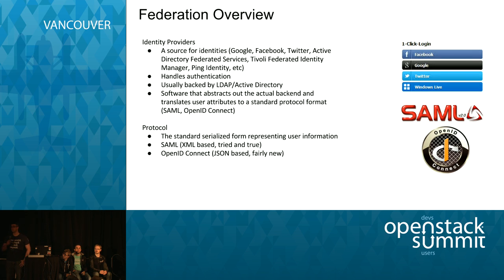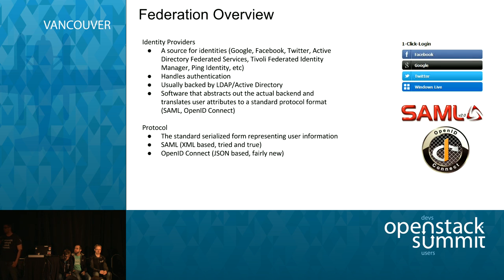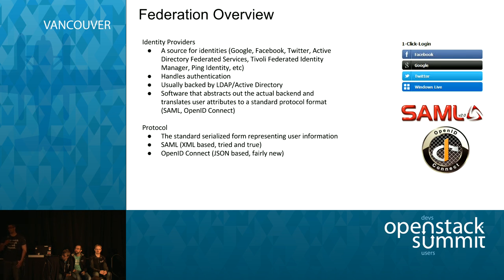To briefly define those: an identity provider is a place where users are stored, and you really want to use it for authentication. Previously, Keystone was handling all this itself — people were saying Keystone was acting like an identity provider. That's not something we want, because most enterprises are not going to want to run Keystone as an identity provider — they have their own, whether that's LDAP, Active Directory, or even MongoDB. You need an identity provider to organize users and represent them in a specific way.